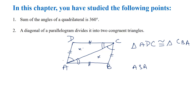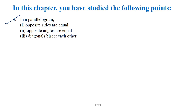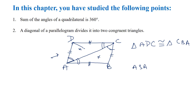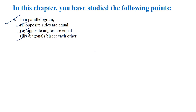Opposite angles of a parallelogram are also equal — angle A equals angle C, and angle D equals angle B. If we draw both diagonals, the diagonals bisect each other, meaning they divide each other into two equal parts. So the three properties of a parallelogram are: opposite sides are equal, opposite angles are equal, and diagonals bisect each other.